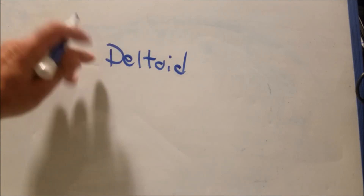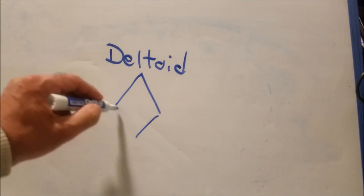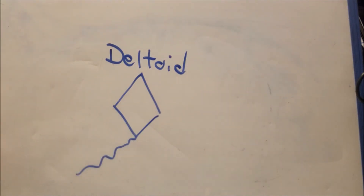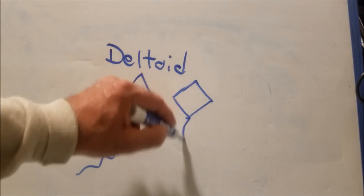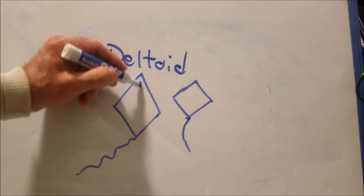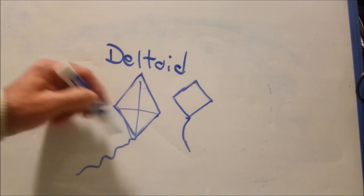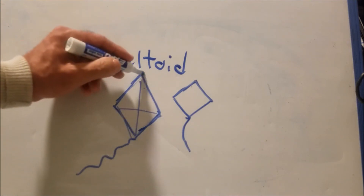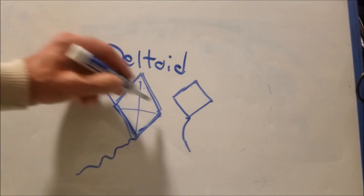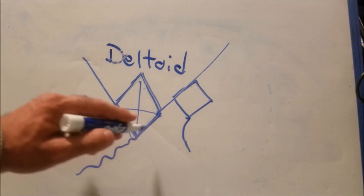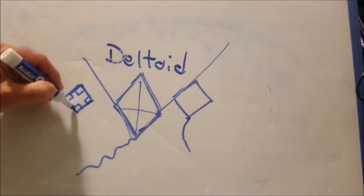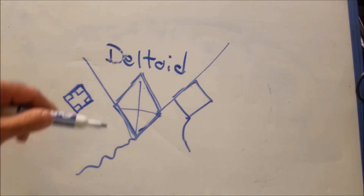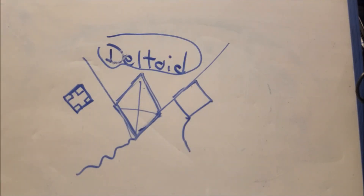Then there's the deltoid, which is essentially a kite — it's not a commonly used term. You can make a kite out of a square or a rhombus, but a deltoid is a special kite where one side is longer than the other. It does not have parallel sides. Just think of a deltoid as a kite for now, and we'll cover it more in other videos.